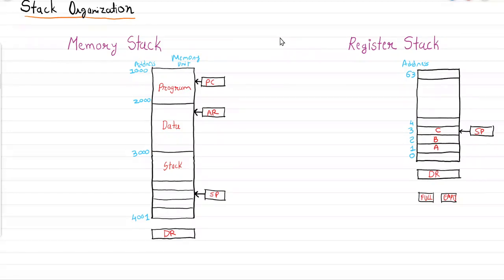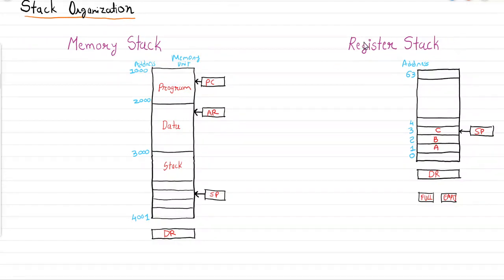Hello students. In the previous lecture we discussed general register organization. In this tutorial we will focus on stack organization. We will discuss two types of stack: the first one is register stack and the other is memory stack. Register stack is implemented using CPU registers, also called hardware stack, while memory stack is implemented using RAM.